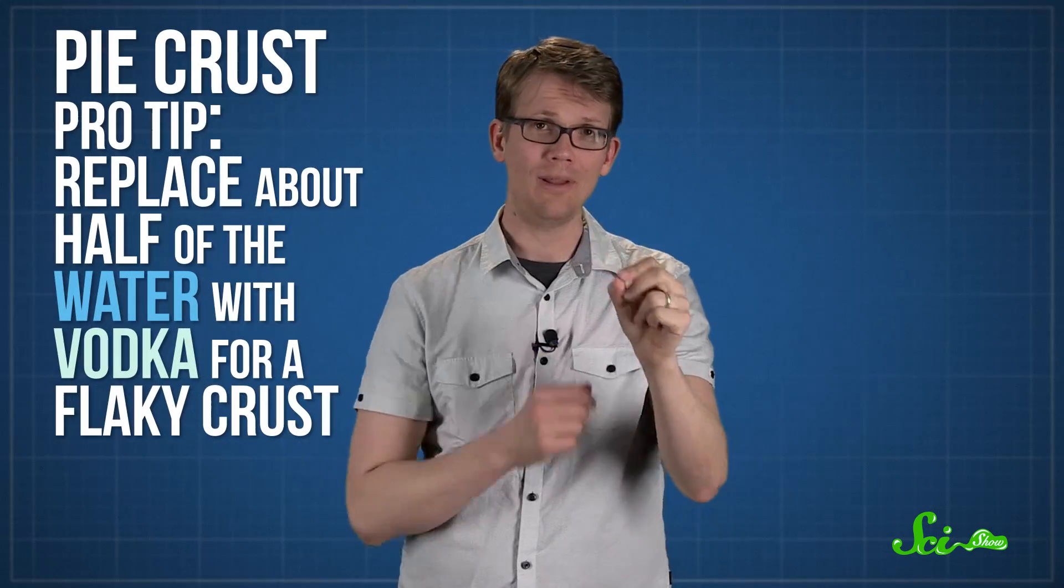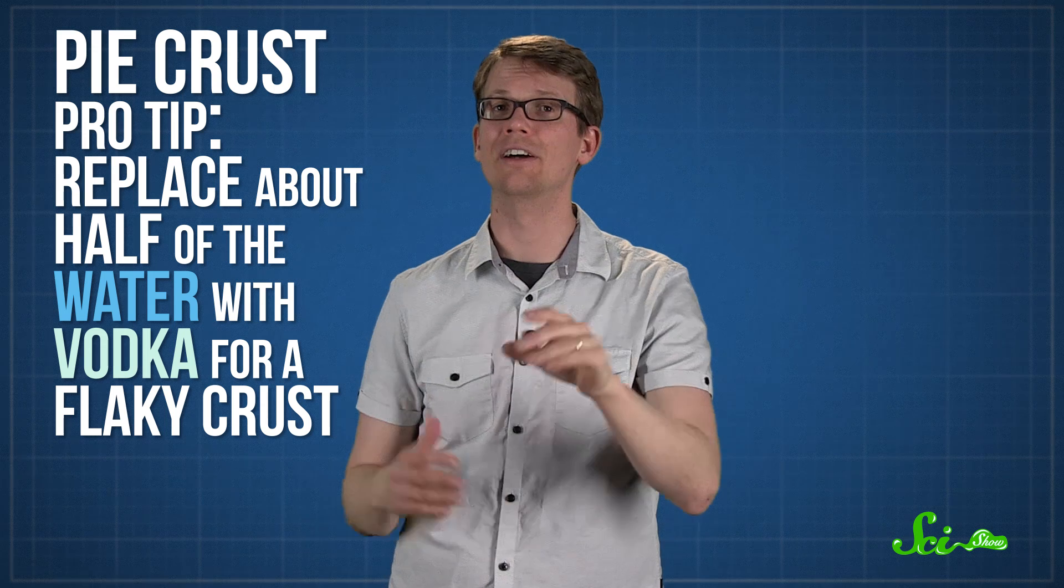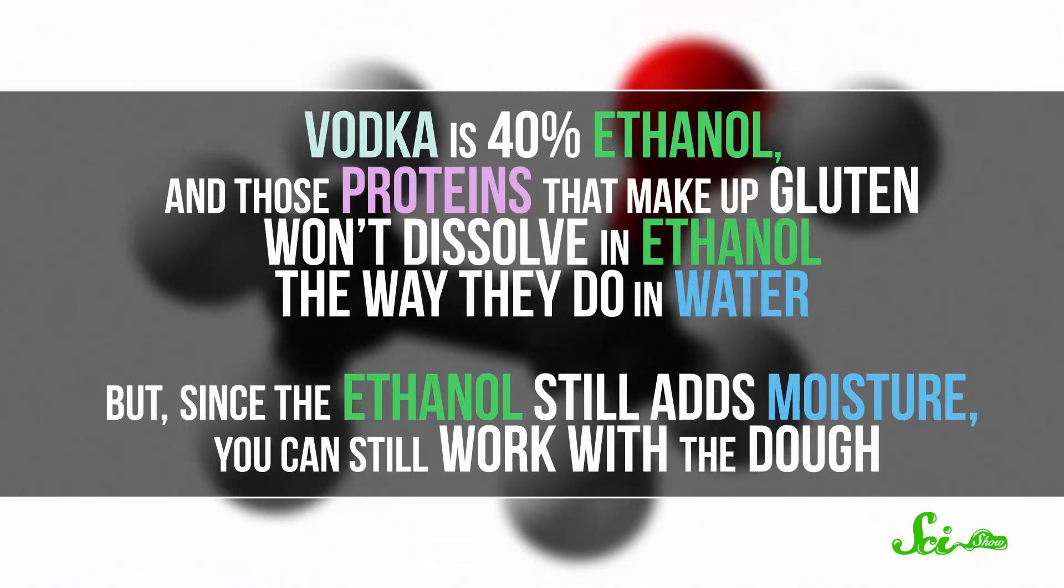So what you want is a pie crust dough that sticks together enough to roll out properly, but stays flaky. And replacing about half of the water with vodka turns out to be a great way to do that. Vodka is 40% ethanol, and those proteins that make up gluten won't dissolve in ethanol the way they do in water. But since the ethanol still adds moisture, you can still work the dough.